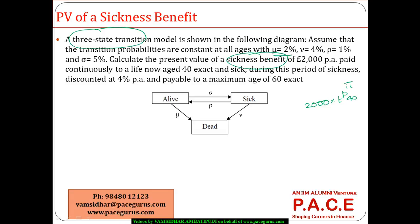During the period of sickness, the benefit is paid continuously to a life now aged 40 and sick. Currently he is in the stage of sickness. The benefit is discounted at 4 percent per annum and payable to a maximum age of 60. To find out the present value, I am integrating between 0 and 20 because the range is from age 40 to 60. The benefit amount is 2000 per year.